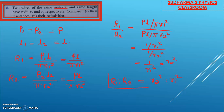That is the answer for the resistance comparison. Now for comparing their resistivities: since both wires are made of the same material, ρ₁ : ρ₂ = 1 : 1. This is a very important question — take it down in your notebook and practice.